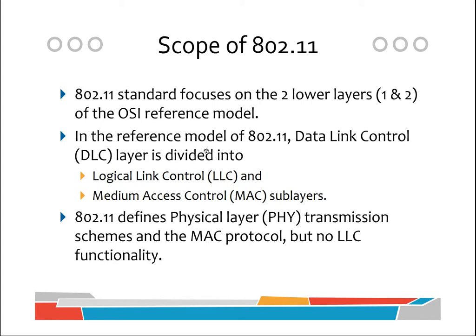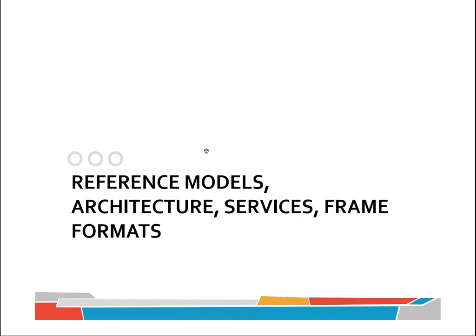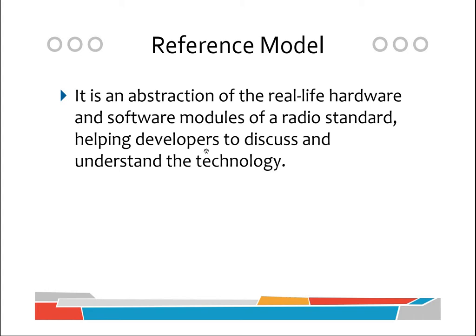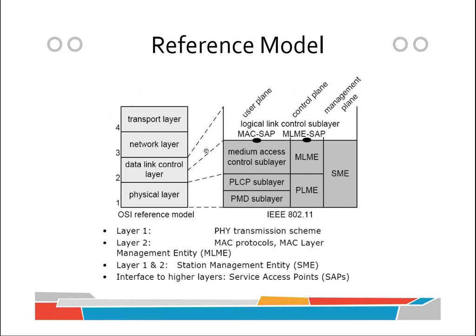In the reference model, the data link control layer of 802.11 is divided into two sub-layers: the logical link control (LLC) and the medium access control (MAC). This protocol mainly deals with the MAC sub-layer and the physical layer. A reference model is an abstraction of real-life hardware or software models of a radio standard, helping developers understand and discuss the technology.